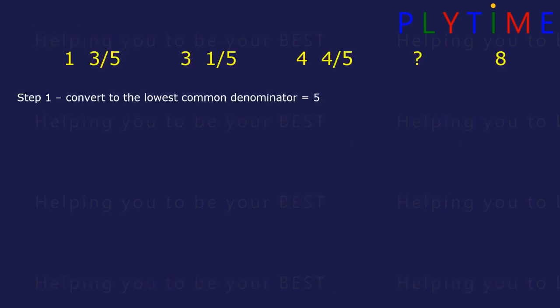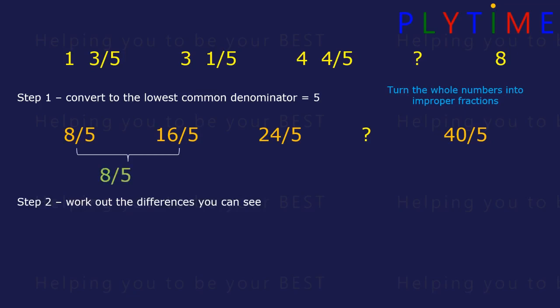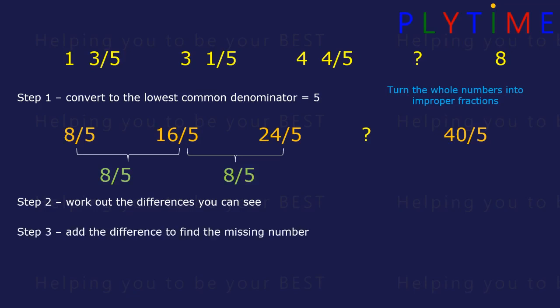We convert to the lowest common denominator — here it's 5. We convert our whole numbers to improper fractions: 1 and 3 fifths is 8 fifths, 3 and 1 fifth is 16 fifths, 4 and 4 fifths is 24 fifths, and 8 is 40 fifths. Now work out the differences: between 8 and 16 is 8 fifths, and between 16 and 24 is 8 fifths. So we add on 8 fifths to 24 fifths.